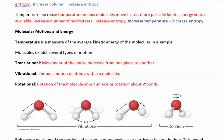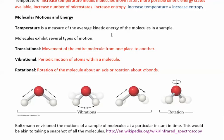Entropy has to do with molecular motions and energy. Temperature is a measure of the kinetic energy of molecules in your sample, and molecules can absorb that energy through different types of motion: translational, vibrational, and rotational. Translational motion is when you actually move the molecule through space — gases have a lot of this. Vibrational motion involves stretching and compressing bonds, and rotational motion involves rotating around bonds. Solids mainly have vibrational motion, while gases can do all three.